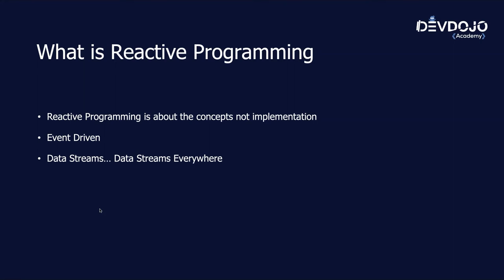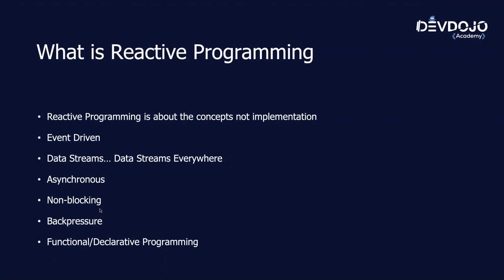This has an interesting side effect: your application will become asynchronous. When we talk about reactive programming, we are talking about asynchronous programming. In Java, we have some asynchronous libraries — for example, thread pools, ForkJoin, ParallelStreams, CompletableFuture. But when we are talking about reactive, they are a little bit different, because they also should be non-blocking. So we have four concepts: asynchronous, non-blocking, back pressure, and functional declarative programming.